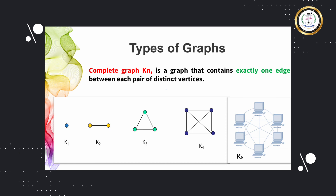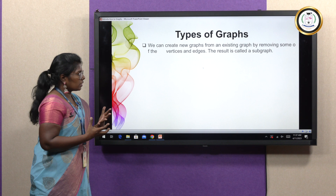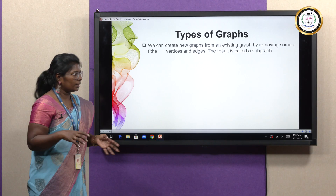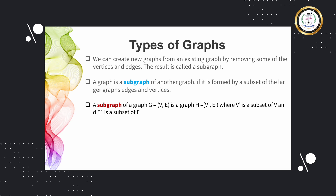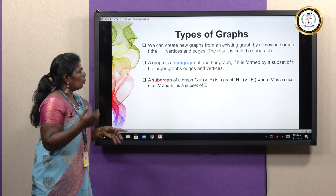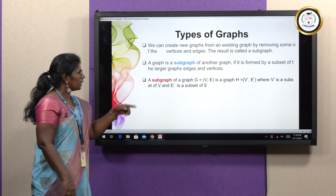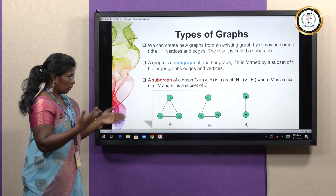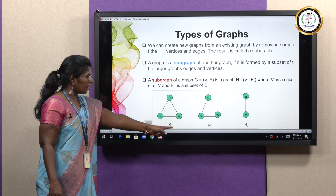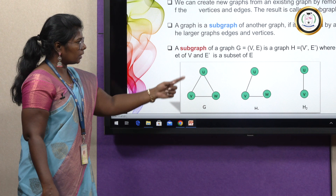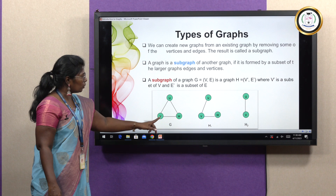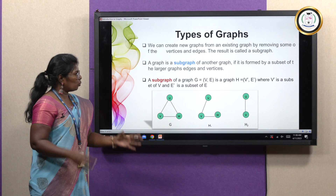Another type of graph is called a subgraph. If we want to create a new graph from an existing graph by deleting some of the vertices or edges, that becomes a subgraph of the original graph. For a graph G, H is said to be a subgraph of G. For example, if G is the original graph with three vertices U, V, W, deleting the U-W edge results in subgraph H1, and deleting edges U-V and V-W results in another subgraph H2. Subgraphs are basically parts of the original graph.